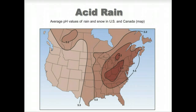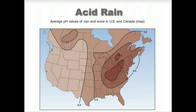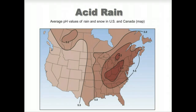Analysis of rain for specific compounds and regions confirms that the chief culprits are the oxides of sulfur and nitrogen. Sulfur dioxide and sulfur trioxide, nitrogen monoxide and nitrogen dioxide are common air pollutants that form acids when mixed with water. These compounds are commonly designated as SOx and NOx.